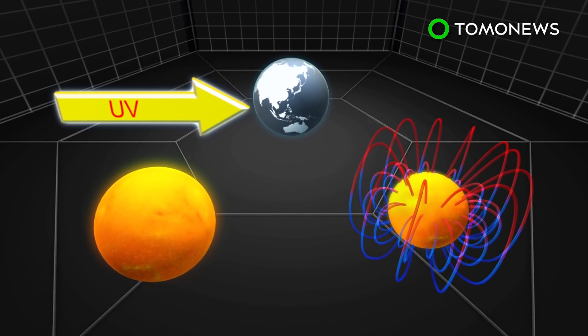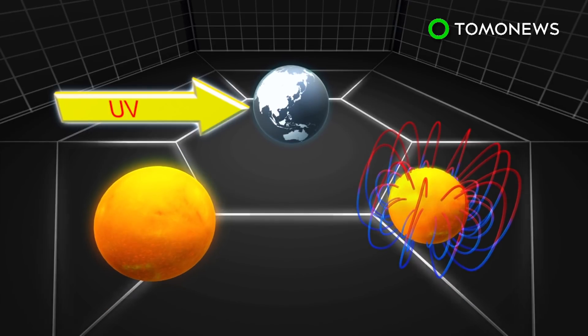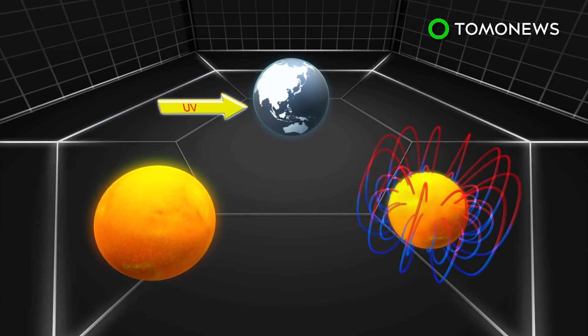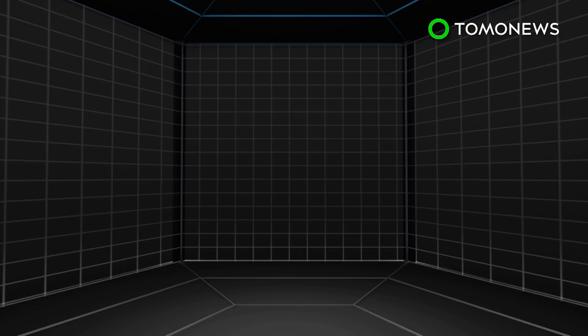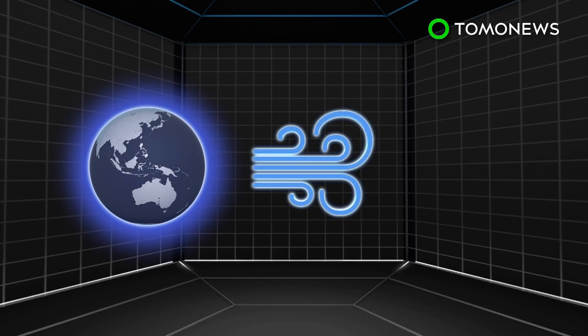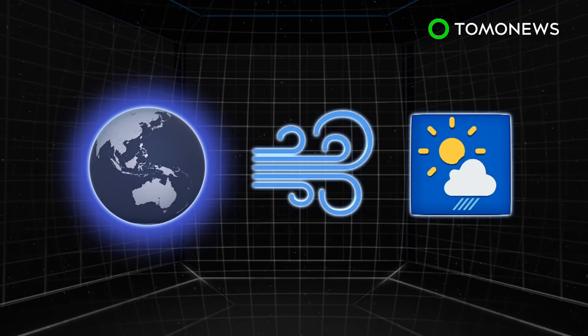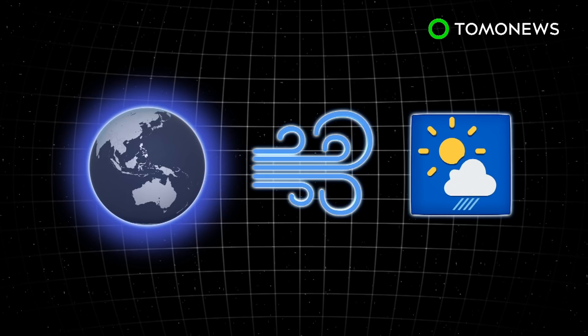During a grand minimum, sunspots form less frequently, the sun's magnetism is reduced, and less ultraviolet radiation makes it to Earth. A dimmer sun will affect Earth by first thinning the stratospheric ozone layer, which will then impact wind and weather patterns.